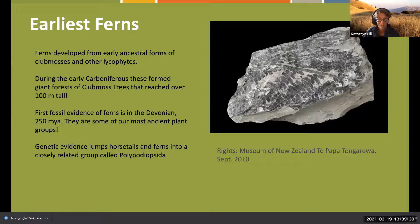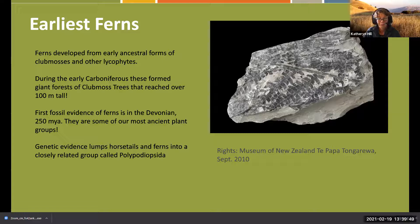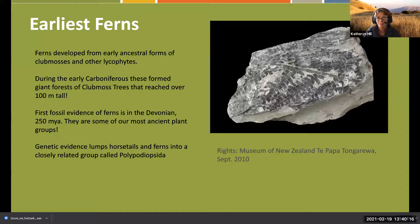The Carboniferous era produced a lot of the coal and oil that we burn today. So when you're driving your car or think about old coal-burning furnaces, you're actually burning ancient ferns. When you think about it in terms of climate change, we're using something that has been around for eons - the magnitude of that just hits me every time.